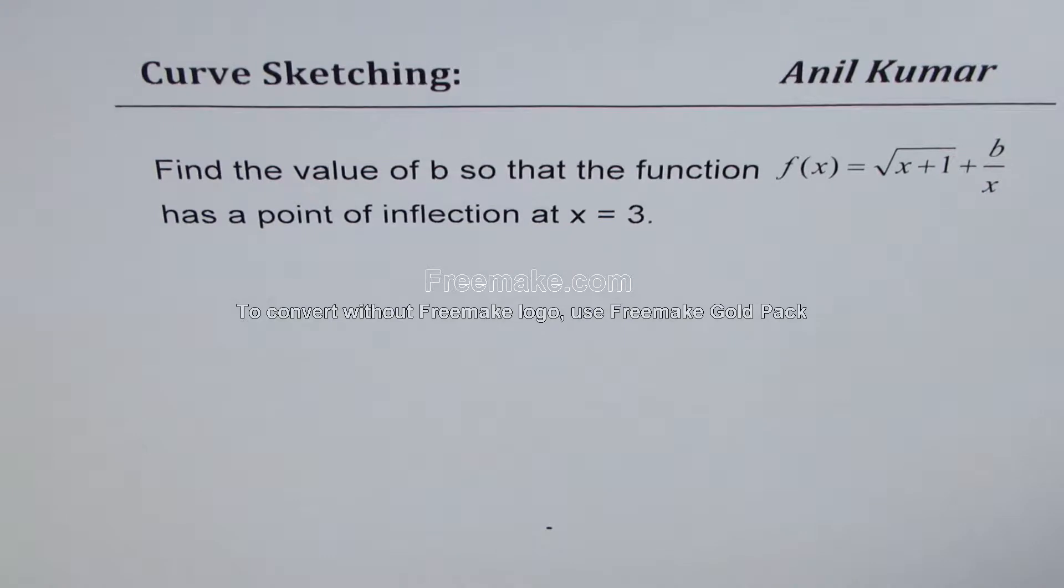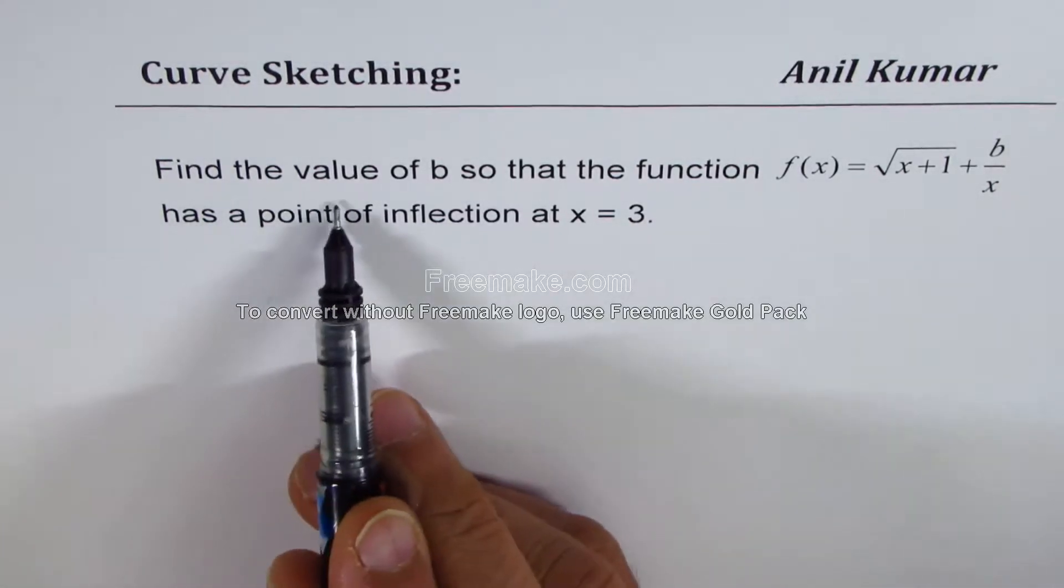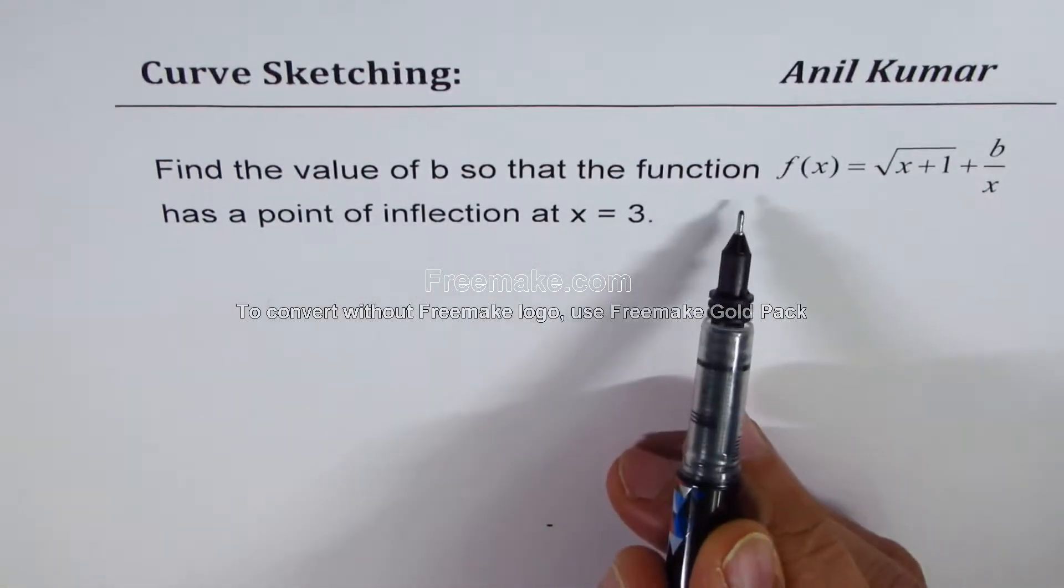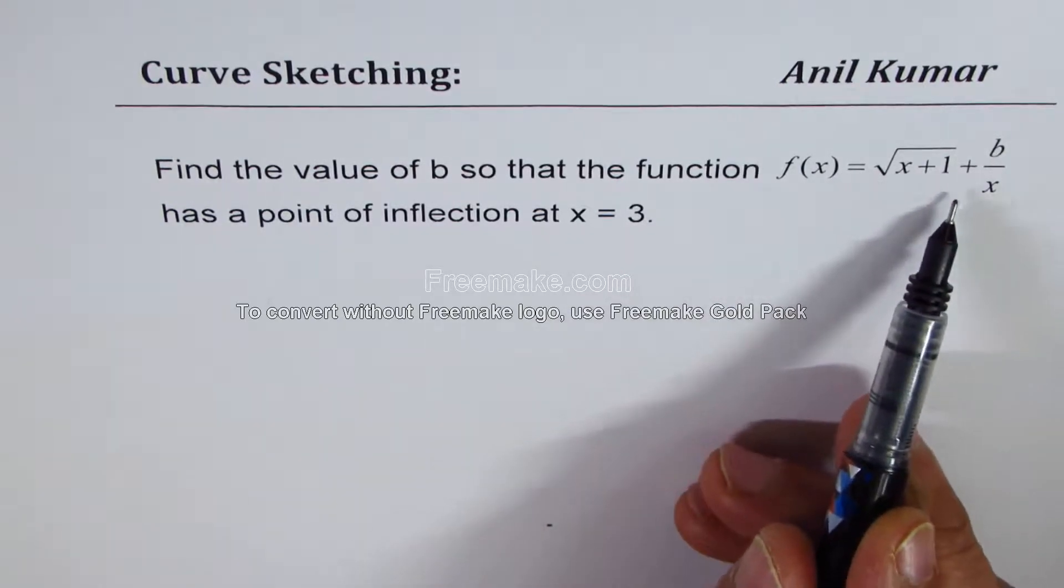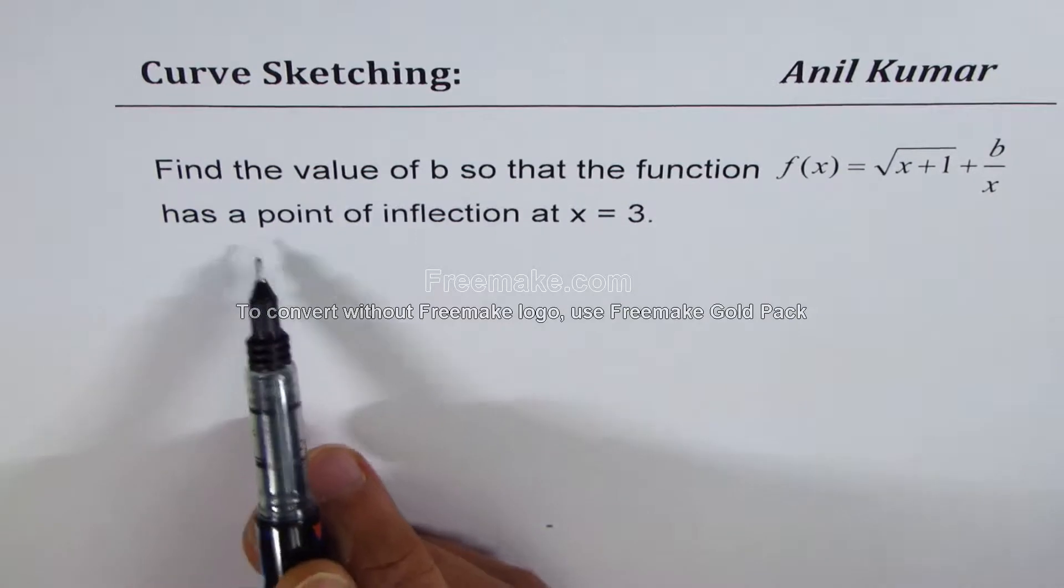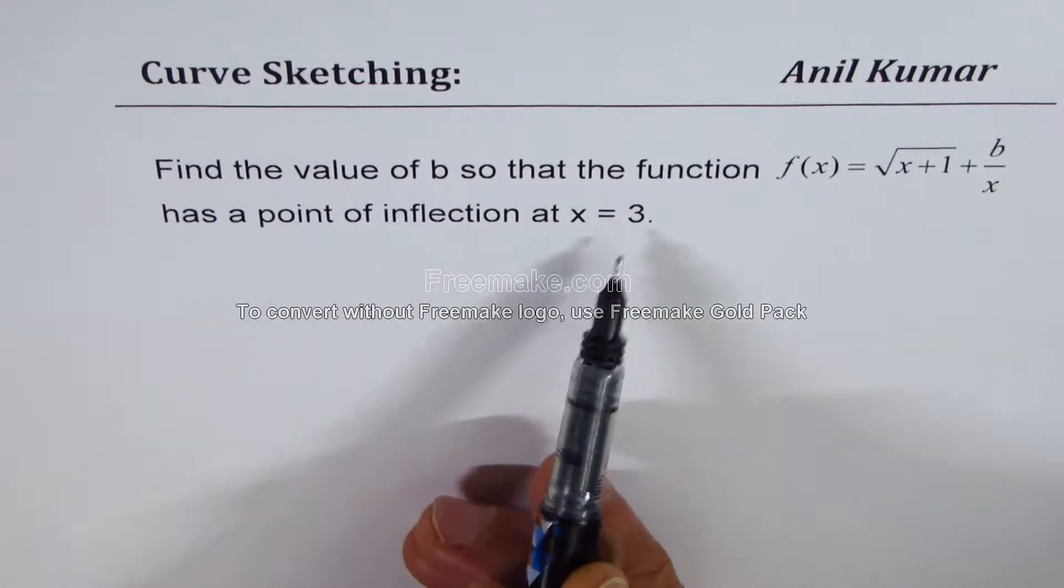I'm Anil Kumar sharing with you a very interesting test question on second derivative. The question here is find the value of b so that the function f(x) equals square root of x plus 1 plus b over x has a point of inflection at x equals 3.